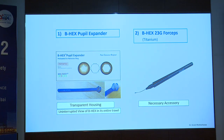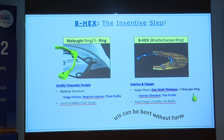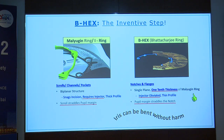The B-hex is a very thin, flexible device with thin notches, strong flanges, and tabs for holding — a hexagonal device as thin as a human hair. It has a transparent housing with constant visibility throughout placement. With an injector, you have no idea what the ring is doing inside. The inventive step of the B-hex versus the Malyugin ring is that other devices are bi-planar — the scroll and pupil margin are on different planes making the device thick — requiring an injector. The B-hex is all in a single plane: the iris bends harmlessly at the notches and can be placed and removed with forceps through a small incision.